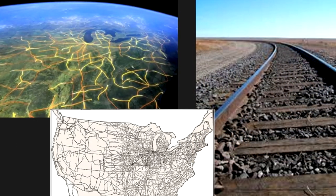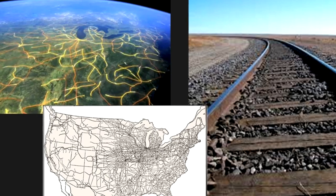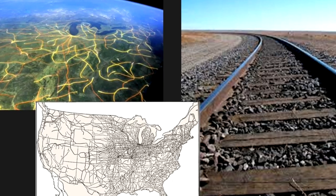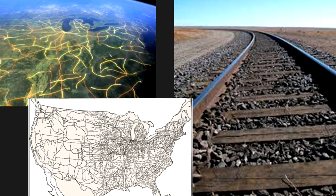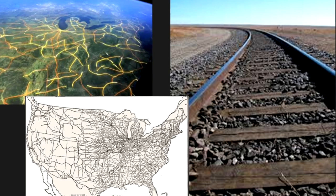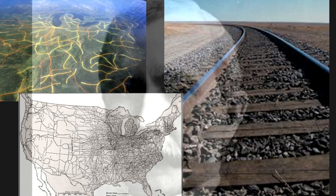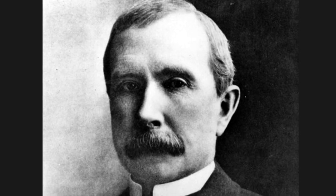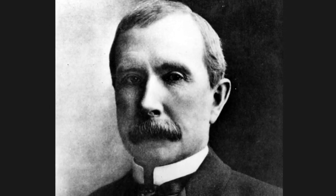Andrew Carnegie and the Bessemer process allowed new railroad tracks to be built at a more affordable cost. Railroad tracks brought Americans closer together — remember the transcontinental railroad completed in 1869 connected the East Coast to the West Coast and created a national market from coast to coast. The other man is John D. Rockefeller, who made his fortune refining oil. Rockefeller formed the Standard Oil Company in 1870, and by 1879 his company controlled over 90% of all the oil refining industry in the United States.